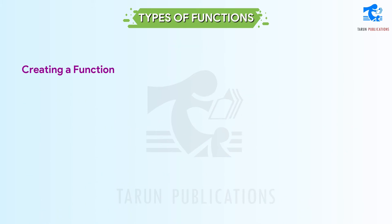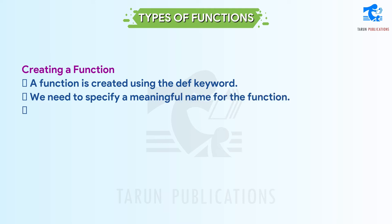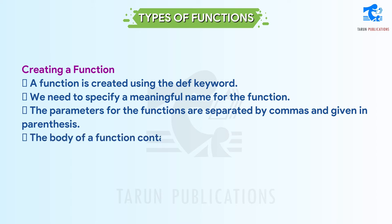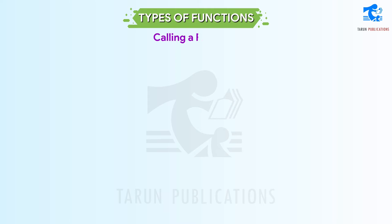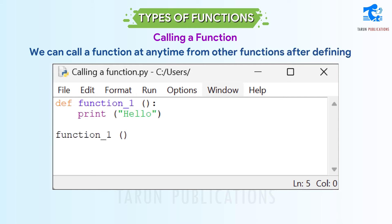Creating a Function. A function is created using the def keyword. We need to specify a meaningful name for the function. The parameters for the functions are separated by commas and given in parentheses. The body of a function contains Python statements. Calling a Function: we can call a function at any time from other functions after defining it.